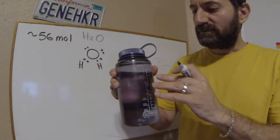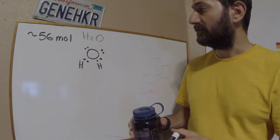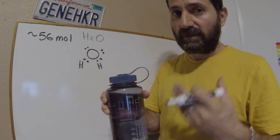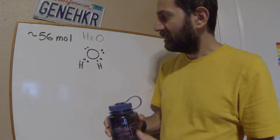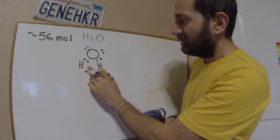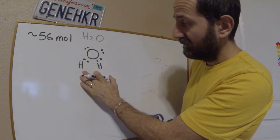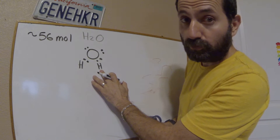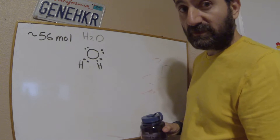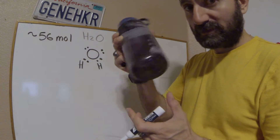Now some of those water molecules — not many, but some — have done something special: the water has broken apart. It's called ionizing. What's happened is a water molecule has split, but instead of the whole hydrogen leaving, only the proton of a hydrogen is leaving the water molecule. This is actually a really important point about pH.